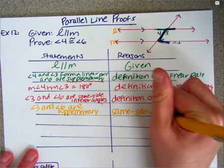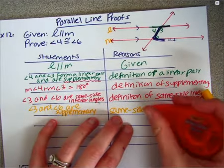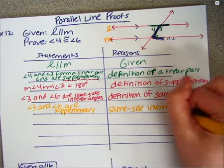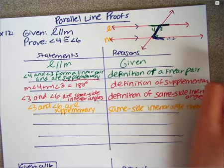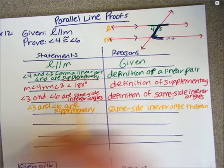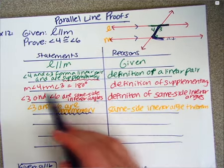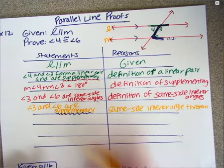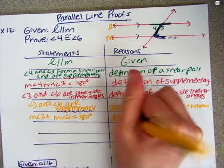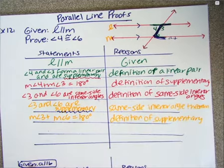The same side interior angle theorem tells me angle three and angle six are supplementary. I see the word 'supplementary' again, so I can define it: the measure of angle three plus the measure of angle six equals 180, by the definition of supplementary.